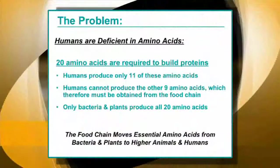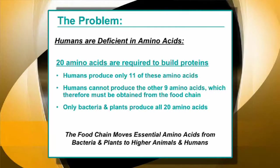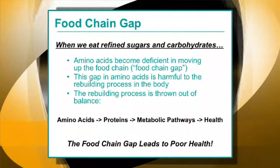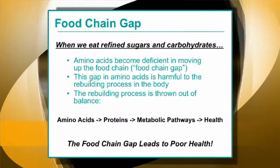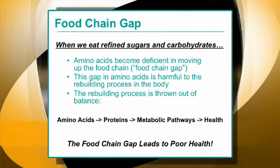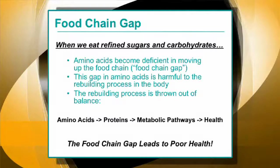We cannot produce the other nine, which therefore must be obtained from the food chain. The only two living forms on planet Earth that produce all 20 amino acids are bacteria and plants. So the food chain moves essential amino acids from bacteria and plants up to higher animals and humans. When we eat refined sugars and carbohydrates, the amino acids become deficient in our diet in moving up the food chain. This gap in amino acids is harmful to the rebuilding process in the body because this rebuilding process is thrown out of balance.